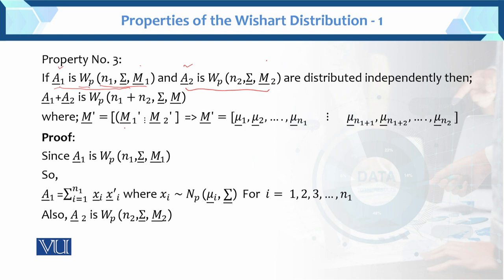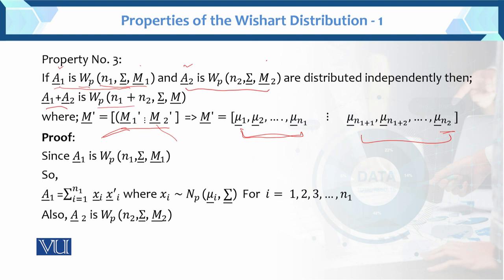Where M' equals this expression — M equals M1' combined with M2'. The partition is done: half part here with n1 terms, and n2 terms there. So M1' equals the mean up to n1 terms, and next terms from n1+1, n1+2, up to n2. This is the whole property: if the Wishart is split into two parts, their addition also follows the Wishart distribution.